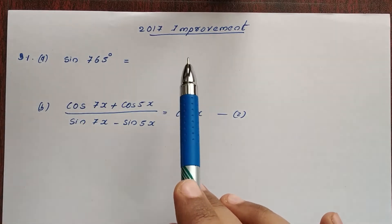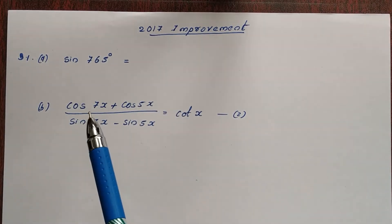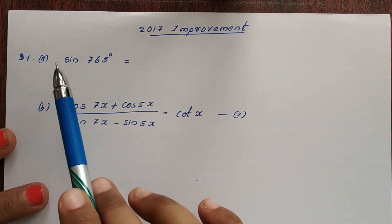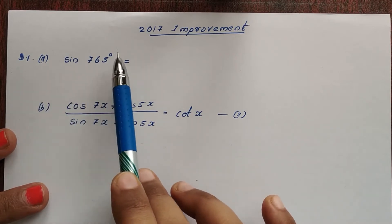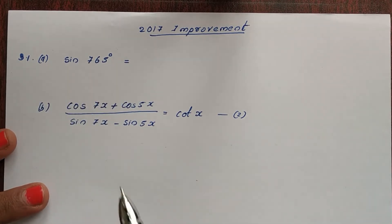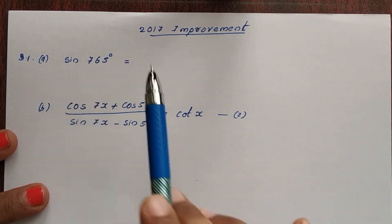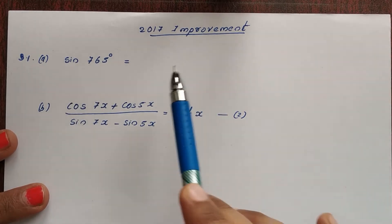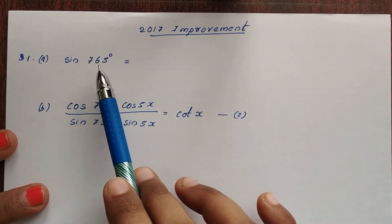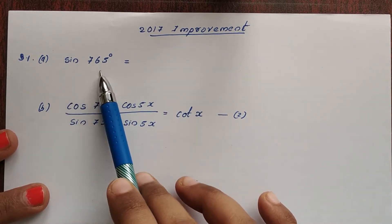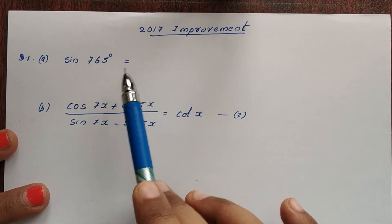Hi everyone. Now we have a question from improvement in 2017. First question: sin 765 degrees. If you have a problem with previous questions, it is not 765 degrees or sin 405 degrees.